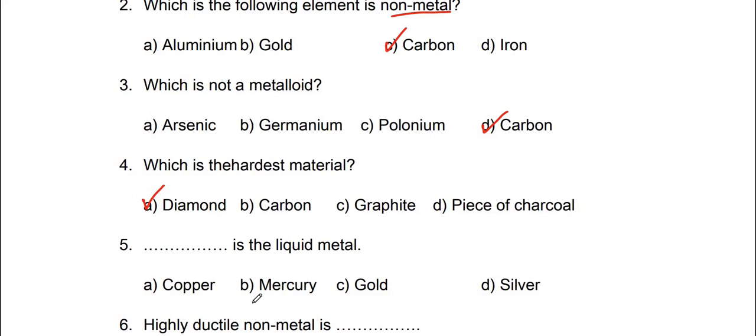Which is the hardest material. Diamond. Dash is the liquid metal. Mercury.